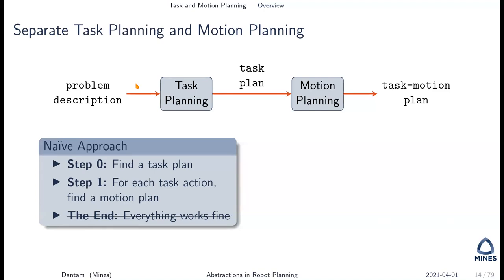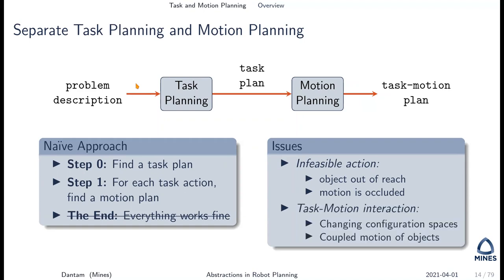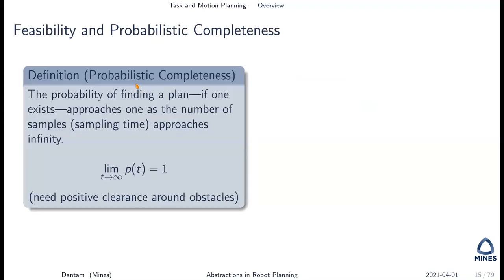There are issues that come up if you just find a task plan and then find a motion plan. Some task actions may not be feasible — an object might be out of reach, or one object may occlude another. There's interaction and coupling between task decisions and motion decisions: as you rearrange objects, the configuration space changes. You move an object, and you can put your hand where it was but not where it is now. And there's coupling of motion between objects — if you stack objects or put them on a tray, their motion becomes coupled.